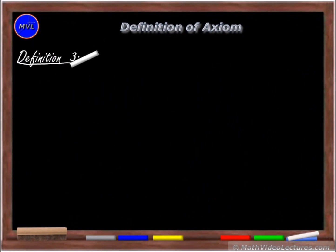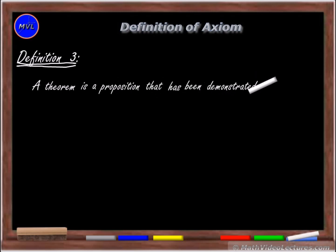Thus, we'll define theorem as a proposition that has been demonstrated on the basis of axioms and one or more other previously proven theorems.